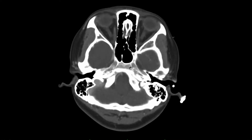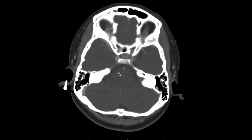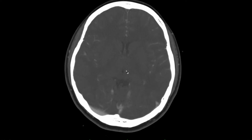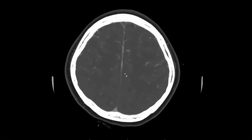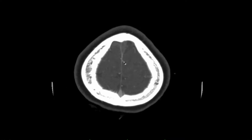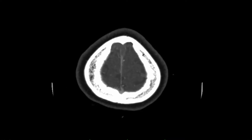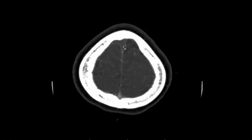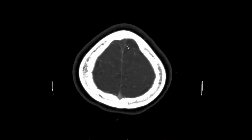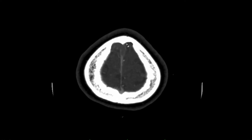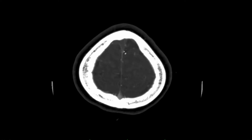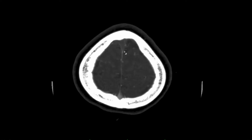That was what was performed, again starting at the skull base and scrolling up. In the region of abnormality identified on the non-contrast brain, you can see that the dural venous sinus anteriorly is non-opacified. It's also expanded. There is an empty delta sign. All of this fits together with the diagnosis of dural venous sinus thrombosis in the superior sagittal sinus.